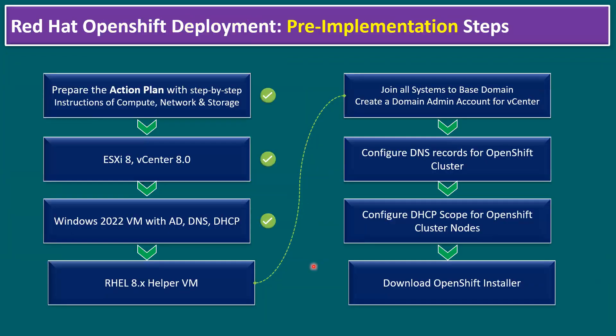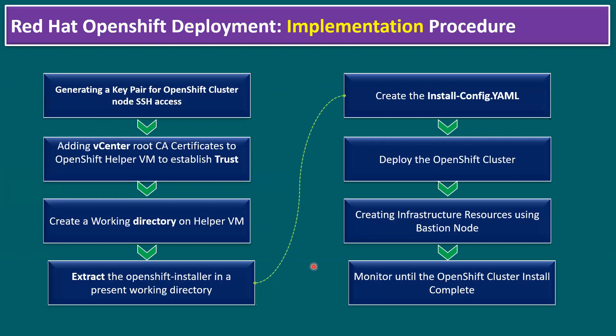Pre-implementation is also completed. In our previous session I talked about creating infrastructure resources using the Bastion node. Installation takes approximately 45 to 60 minutes, but our installation got failed, so I approached an alternative method. Let me explain why the installation failed.